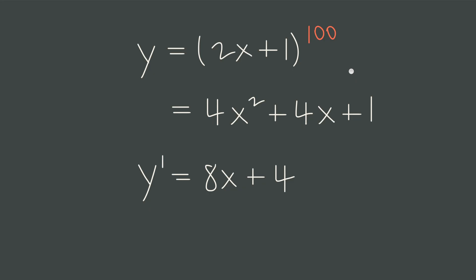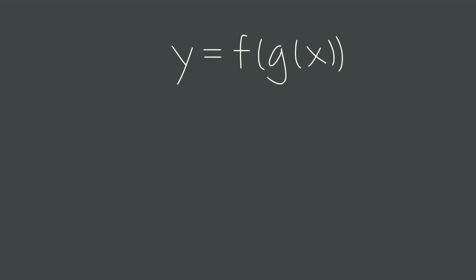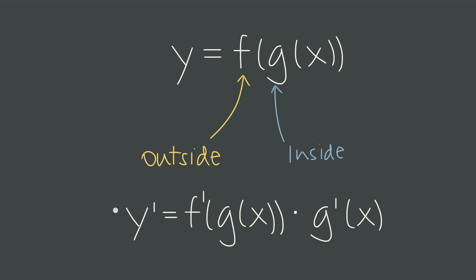By the end of this video, you'll have a complete toolkit to master it — not just how it works, but why, and how to apply it flawlessly every time you take a derivative. Our first question is: what does it even mean to have a nested function? Well, if we have a function like this one, and we think about f as the outside function and g as the inside function, then chain rule just looks like this. The derivative is the derivative of the outside function while the inside function stays the same, multiplied by the derivative of the inside function. Why multiplication?